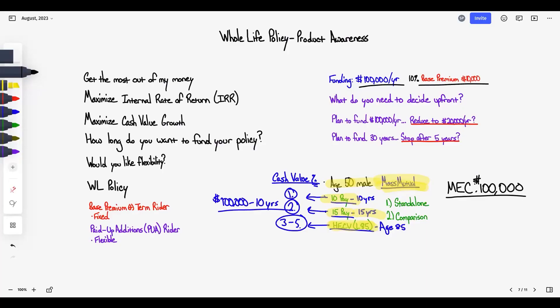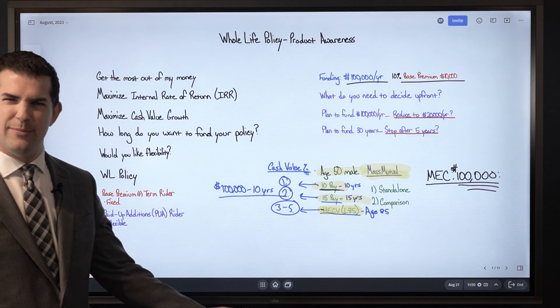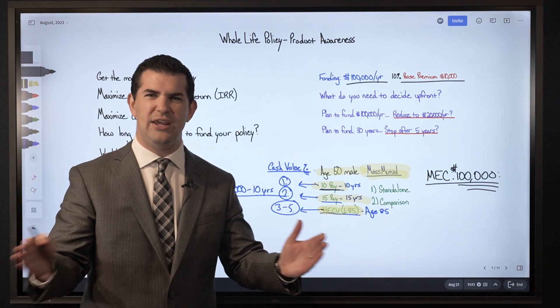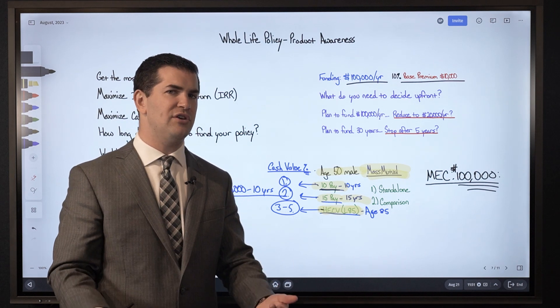But these products, different death benefits will give you the same MEC limit. What that means is I need, for example, a lower death benefit to get the same $100,000 MEC limit with the 10 pay compared to the high early cash value. I know that that can be confusing, which is why seeing it side-by-side helps us make the decision.